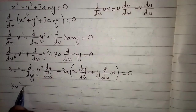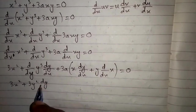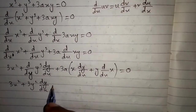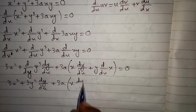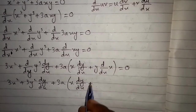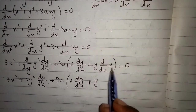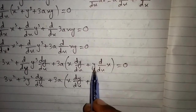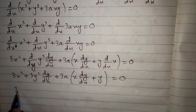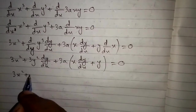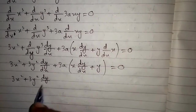So we have 3x² plus 3y²·dy/dx plus 3a times (x·dy/dx + y·1) equals 0. Since the derivative of x is 1, multiplying 1 by y gives y.